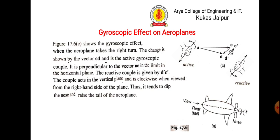Now, suppose it takes a right hand side turn, then what will happen? The active couple will be from D to C, but the reactive couple will be from D dash to C dash.